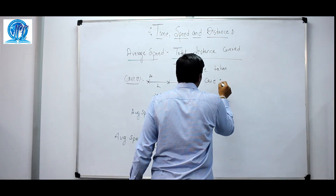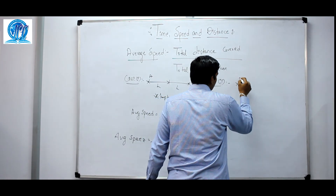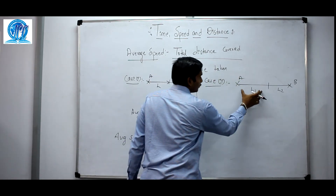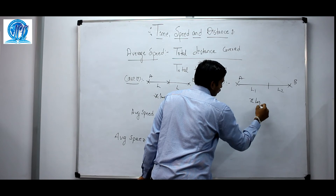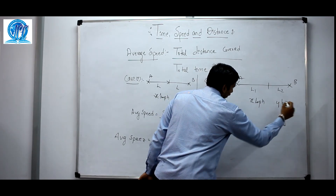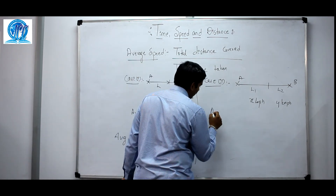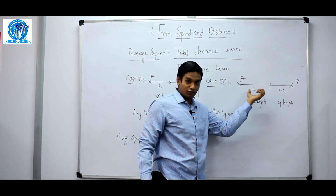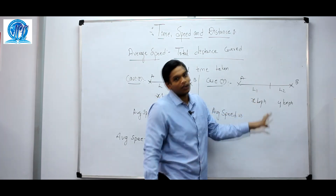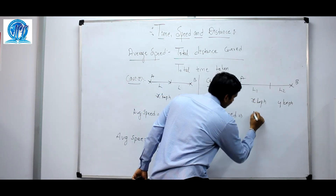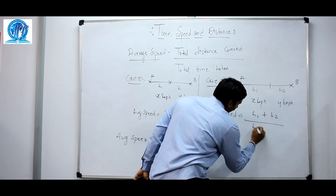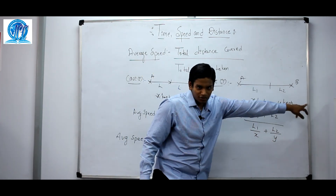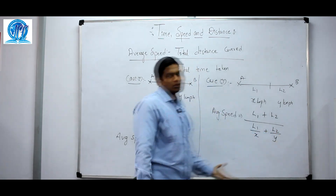Case 2: A journey from point A to point B where different distances L1 and L2 are covered at different speeds. L1 is covered at x km/h and L2 at y km/h. The average speed in this case is: (L1 + L2) divided by (L1/x + L2/y). If there is a third segment L3 covered at speed z, you can include that additional term in the same way. This is the general average speed formula.